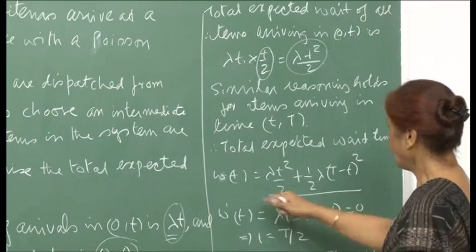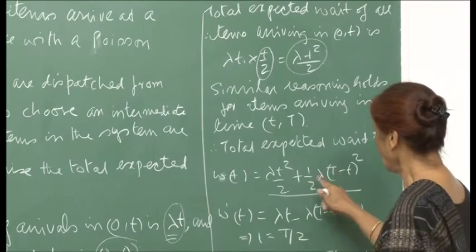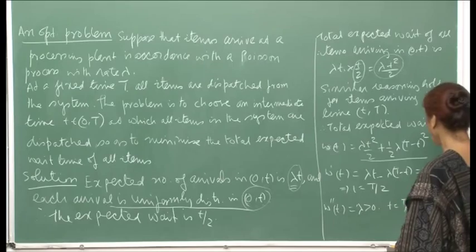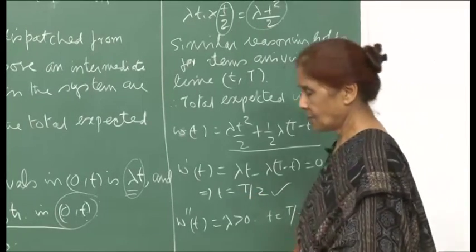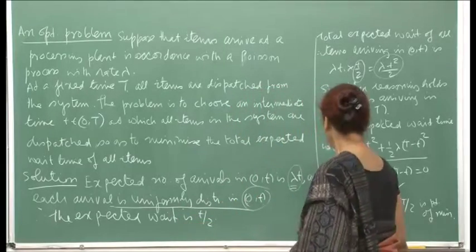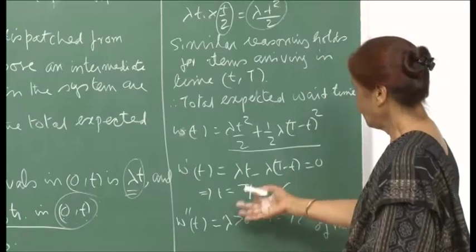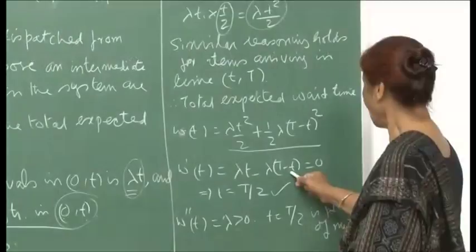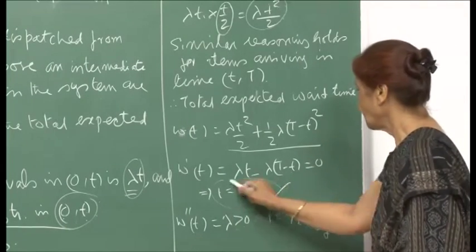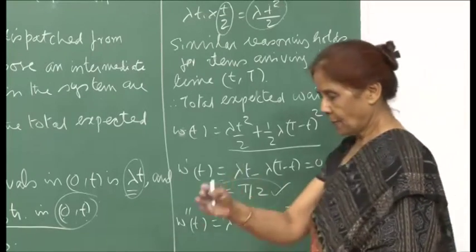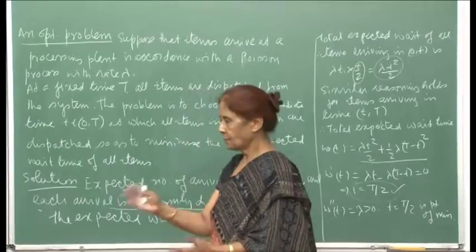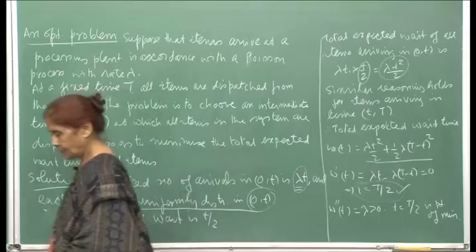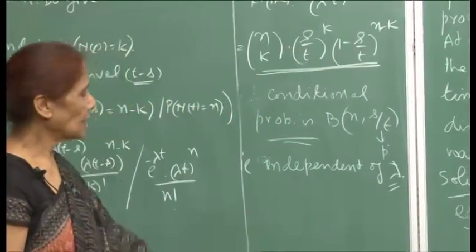To minimize W(t), differentiate with respect to t: W'(t) = λt − λ(T−t) = 0, giving t = T/2. Since W''(t) = 2λ > 0, this is indeed the minimizing value. The optimal strategy is to dispatch items at the midpoint of the time period, as expected from the uniform distribution of arrivals.